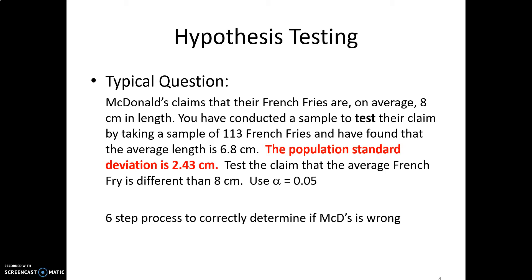In this first question, we're going to use a Z value. We're going to test a claim that the average French fry is different than 8 centimeters. And we're using that alpha value that's similar to Chapter 7 in terms of the chance of error. We only want a 5% chance of making a mistake.